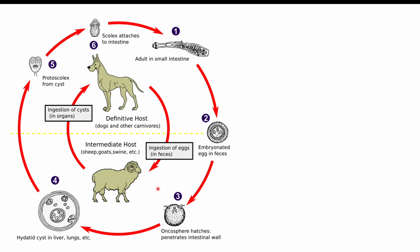Cattle or other animals like sheep or goats feeding in the grass then ingest those eggs. Those eggs become what we call onchospheres, which attach to and penetrate the intestinal wall, circulate in the bloodstream, and form cysts in different organs like the lungs and liver. When that animal is killed, another dog or carnivore consumes the organs and becomes infected, and the cycle continues.